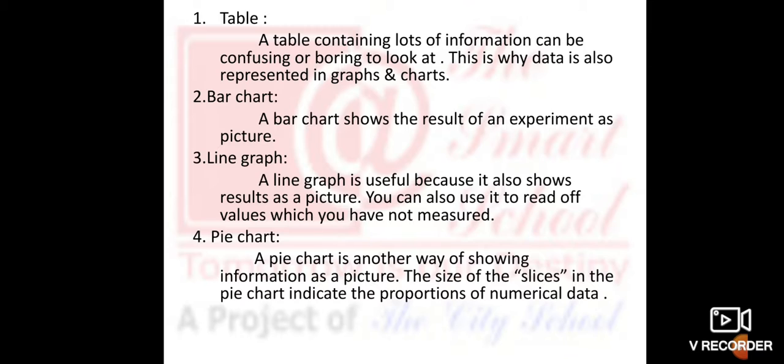Number two is bar chart. A bar chart shows the result of an experiment as picture. Number three is line graph. A line graph is useful because it also shows result as a picture. You can also use it to read off values which you have not measured.